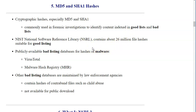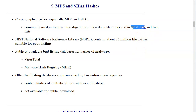The National Software Reference Library is a government organization that contains about 26 million file hashes suitable for good listing. We will be able to download an index for the NIST NSRL and attach it to our case when examining our data sources. This number is not frozen — as new versions of operating systems and popular software are released, software libraries are submitted to the National Software Reference Library for indexing.